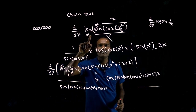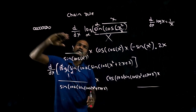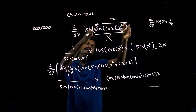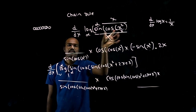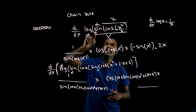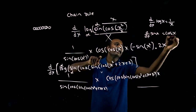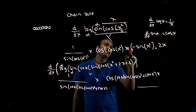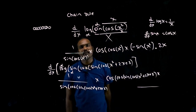Now let's go to the simpler example: log of sine of cos of x squared. All functions are chained. Log differentiation is 1/x, so 1 over sine of cos of x squared. Times. Then sine differentiation is cos — cos of x squared. Times. Then cos differentiation is minus sine — x squared. Times. x squared differentiation is 2x.